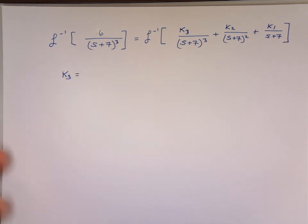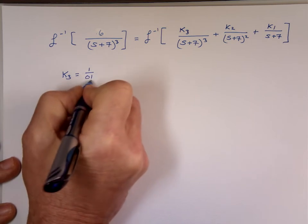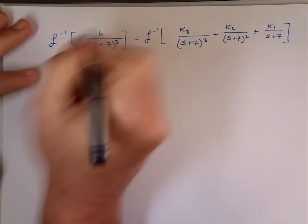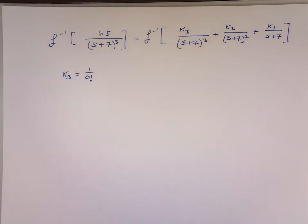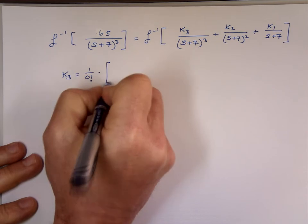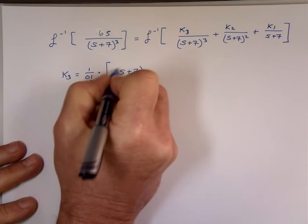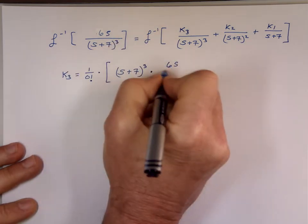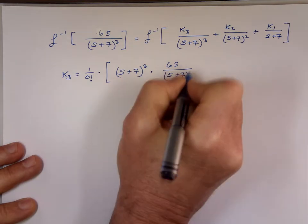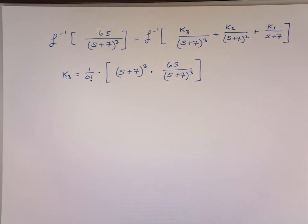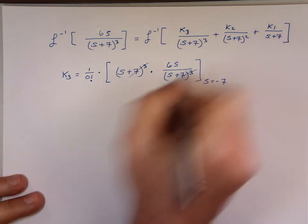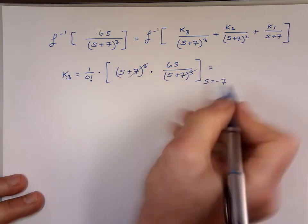To find k3, it's going to be 1 over 0 factorial times the derivative to the 0, which means there is really no derivative. Let's make the numerator 6s. So you multiply s plus 7 cubed times v(s). When s equals negative 7, this cancels. 0 factorial is 1, so k3 is 6 times negative 7, which is negative 42.